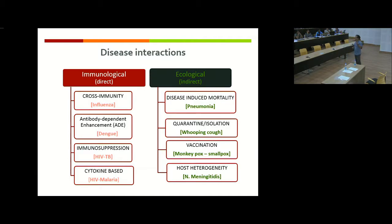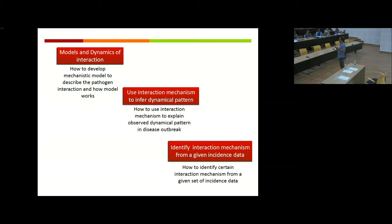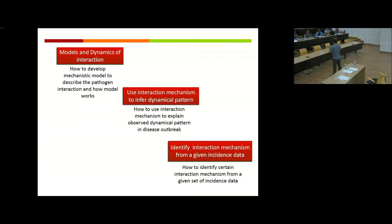I'll give an overall view of cross immunity, antibody-dependent enhancement, and isolation. This talk covers a mix of my own work and other work. My talk is split into three parts: first, models and dynamics of interaction — how mechanisms shape dynamics; second, using the interaction mechanism to infer dynamical patterns of certain diseases; and third, the inverse problem — given the data, can we identify what kind of mechanism is operating?